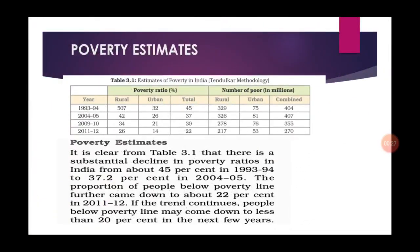Before starting, let us recall what we discussed in the previous part. Poor people are not able to fulfill their basic requirements such as food, shelter and clothing, and this situation is known as poverty. We also saw different dimensions of poverty - low level of consumption is a typical characteristic feature of people living in poverty.